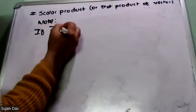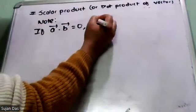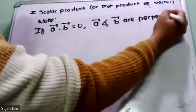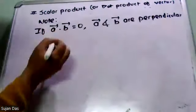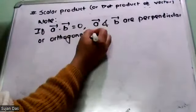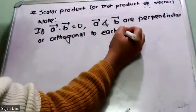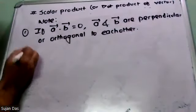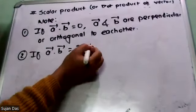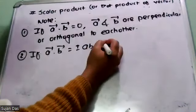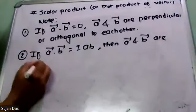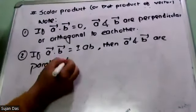In summary: if vector A dot vector B equals 0, then vector A and vector B are perpendicular or orthogonal to each other. If vector A dot vector B equals plus or minus AB, then vector A and vector B are parallel to each other.